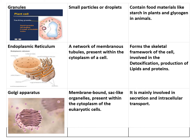Next is the Golgi apparatus — a membrane-bound, sac-like or bag-like organelle present within the cytoplasm of eukaryotic cells. It is not present in prokaryotic cells. It is mainly involved in secretion and intracellular transport, specifically in the synthesis and secretion of enzymes and hormones. One important function of the Golgi apparatus is that it also helps in the formation of the acrosome of sperm, which is the head portion of the sperm.